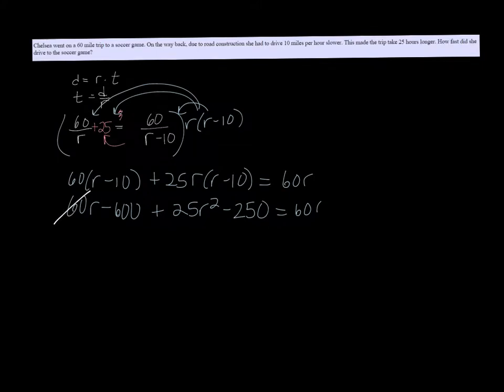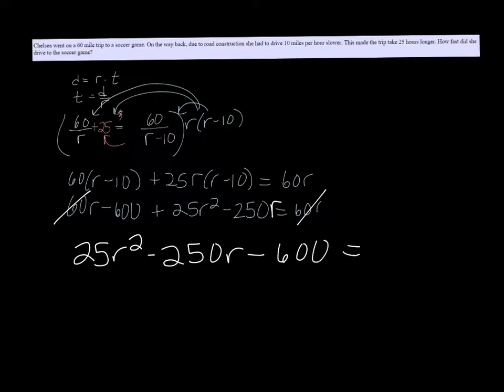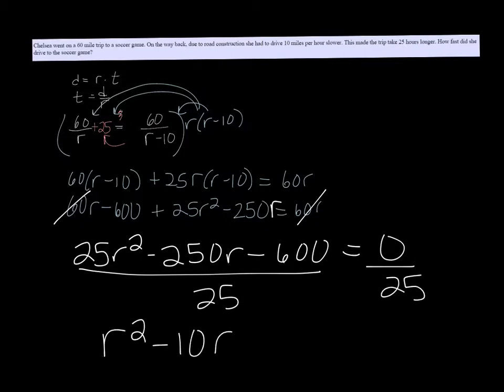Alright, the 60r on the left side and the right side will cancel out. So we get 25r squared minus 250r minus 600 equals 0. We can divide both sides by 25 to simplify this quadratic equation, and then we get r squared minus 10r minus 24 equals 0.